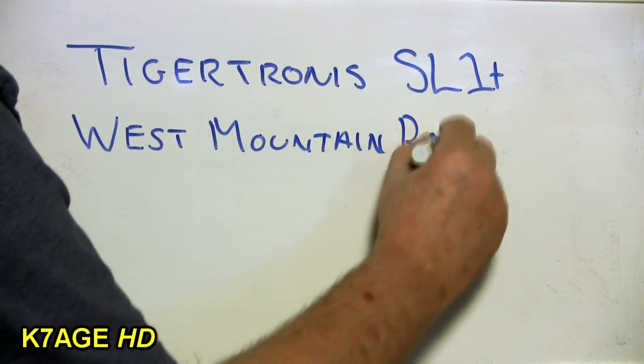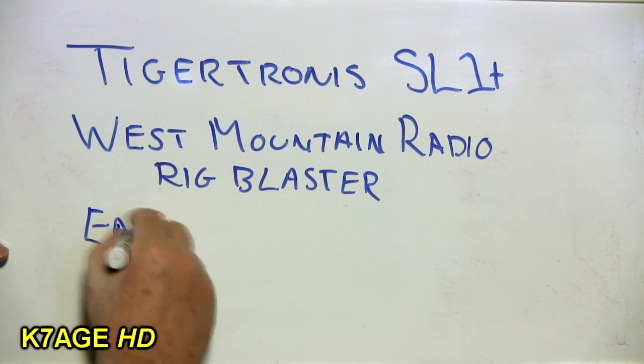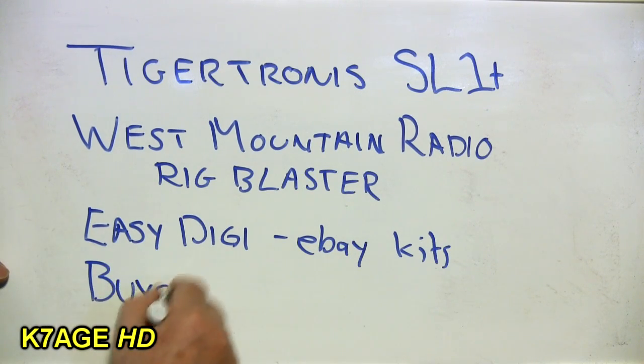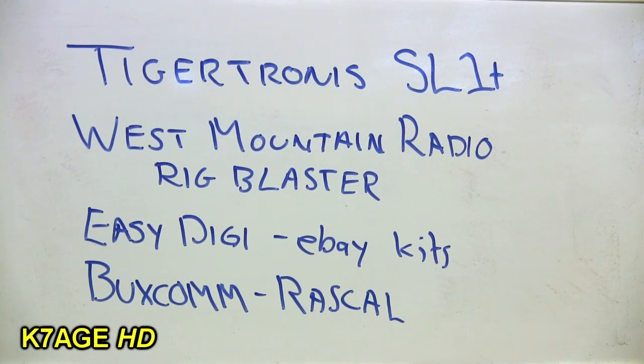So examples of these are from Tigertronics. They're SL1 Plus. West Mountain Radio has the Rig Blaster series. Easy Digi has assembled kits available on eBay. Buxcom with their Rasko interfaces and there's many others out there.